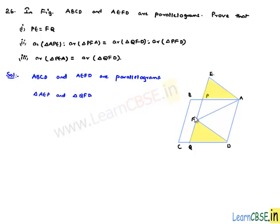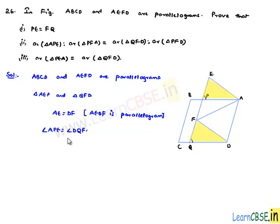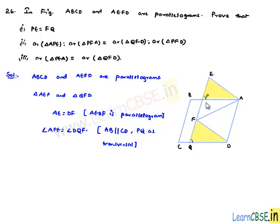In these two triangles, AE will be equal to DF since AEFD is a parallelogram — in a parallelogram, opposite sides are equal and parallel. Next, angle APE will be equal to angle DQF since ABCD is a parallelogram and PQ acts as a transversal. Consider AB parallel to CD with PQ as transversal.